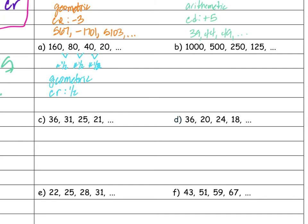The next three terms for A: half of 20 is 10, half of 10 is 5, half of 5 is 2.5. For B, it also looks like I'm cutting them in half, so multiplying by one half again — geometric with a common ratio of one half. The next three terms: 125 divided by 2 is 62.5, divided by 2 is 31.25, divided by 2 is 15.625.